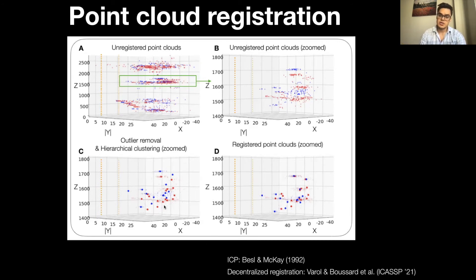Once we have pairwise translation estimations from each time bin to any other time bin, we can then estimate the global position of a time bin using the decentralized registration technique that we detailed in this recent ICASSP paper.